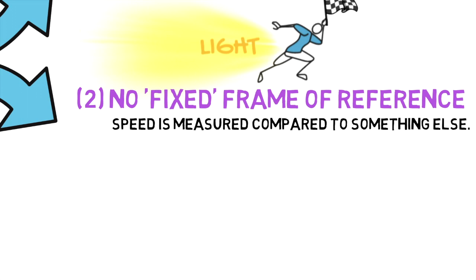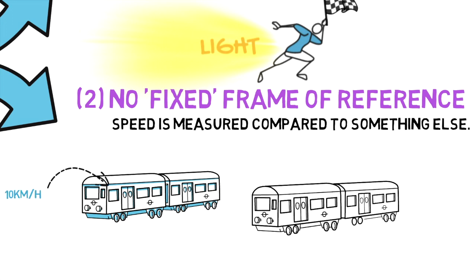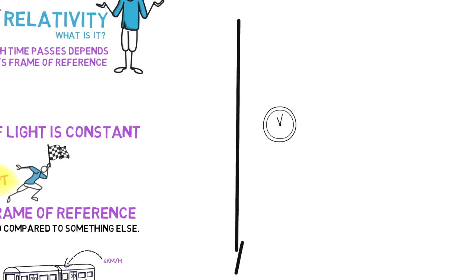Likewise, speed is measured compared to something else. For example, a train looks like it is traveling at 10 kilometers per hour to someone standing still on the platform. But to someone on the purple train moving at 4 kilometers per hour, the blue train looks like it is moving at only 6 kilometers per hour. Therefore, the train may be moving at the same speed, but it's different depending on the frame of reference.